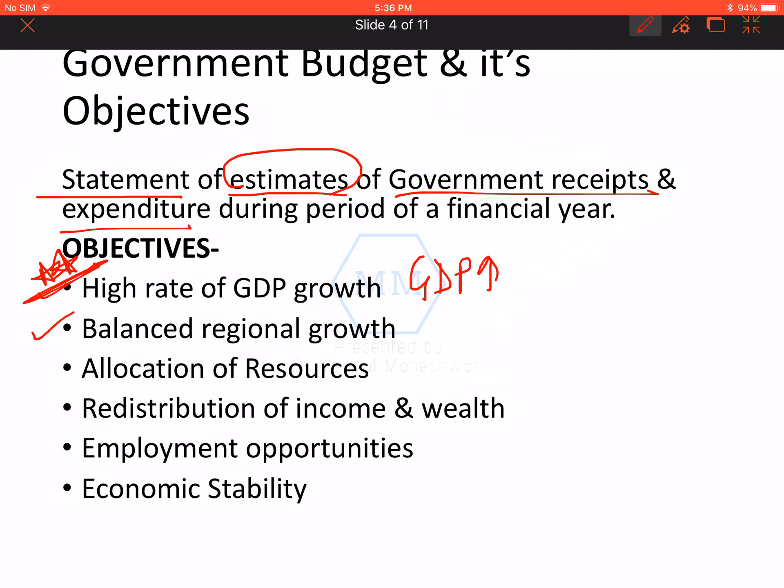The second objective is balanced regional growth. Government budget is a good way to balance regional growth. That means the government focuses on backward areas and decides that those areas can also be developed, resulting in balanced regional development.